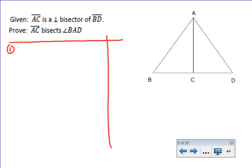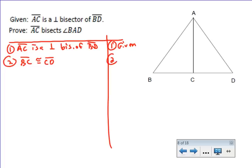Now what they give you is that AC is a perpendicular bisector of BD, and this gives you a lot of information. It first tells you that AC is a bisector of BD, and if AC is a bisector of BD, that means BC is congruent to CD because that means that C is the midpoint. So that's just definition of segment bisector.